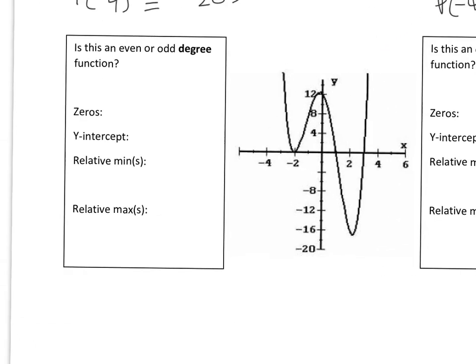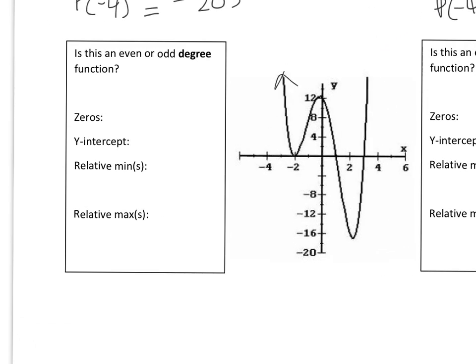Is this an even or odd degree function? I can tell it's even because it's starting up and ending up — that's the end behavior. The zeros are where it crosses the x-axis or touches the x-axis. It looks like there's a multiplicity of 2 at one point because it's touching and bouncing back. The zeros are negative 2, 1, and 3. The y-intercept is where it crosses the y-axis, which is at 0, 12.